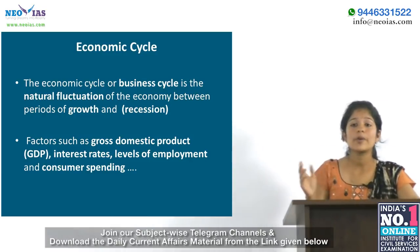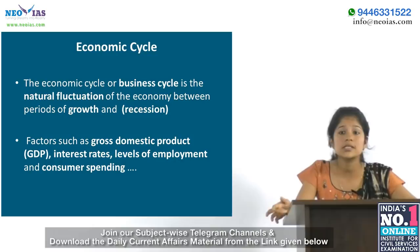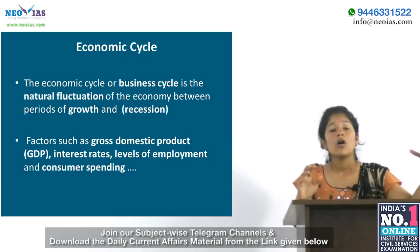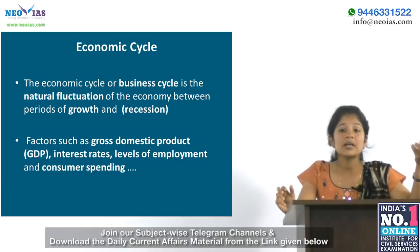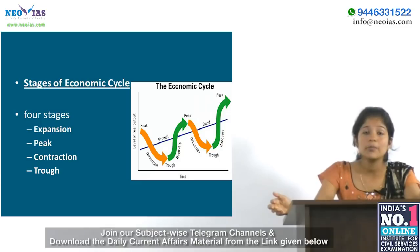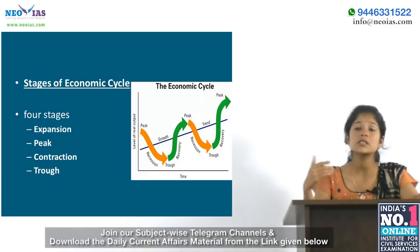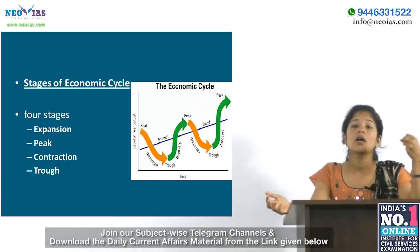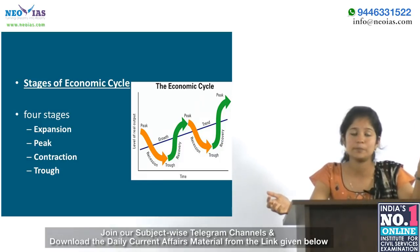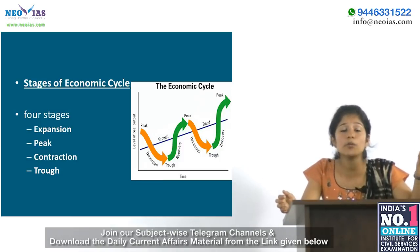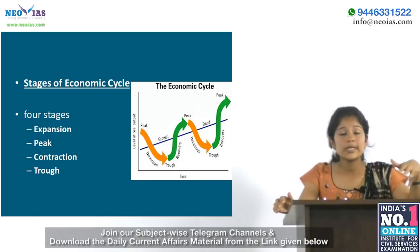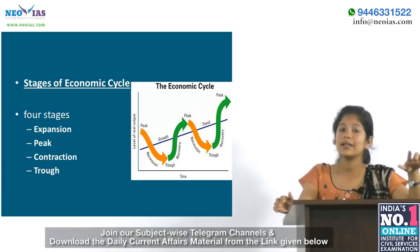Factors such as gross domestic product, interest rates, levels of employment, and consumer spending can all help determine the current stage of the economic cycle. During the time of expansion, investors seek to purchase companies in technology, capital goods and basic energy. During the time of contraction, investors look to purchase companies such as utilities, financials and healthcare.